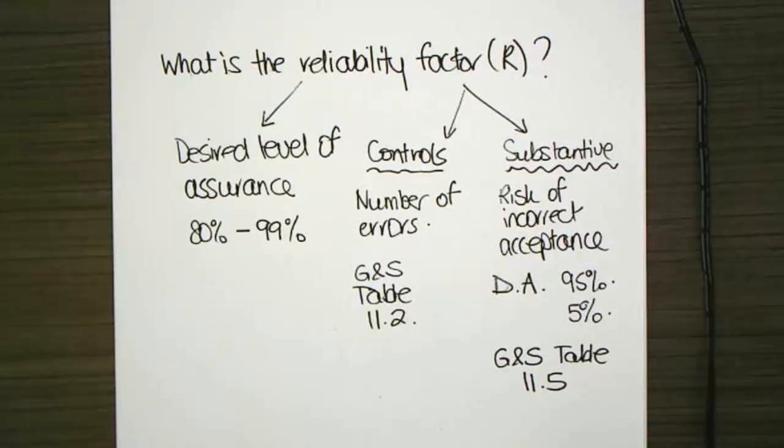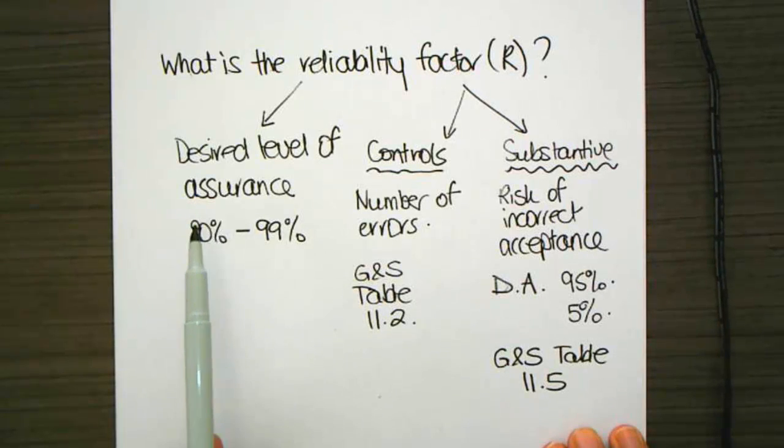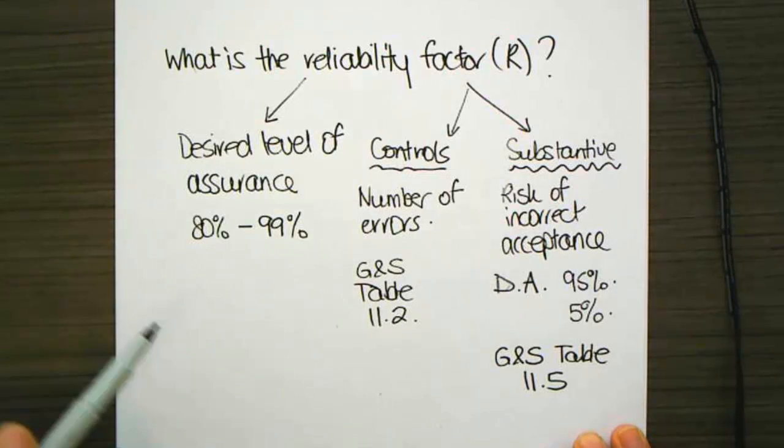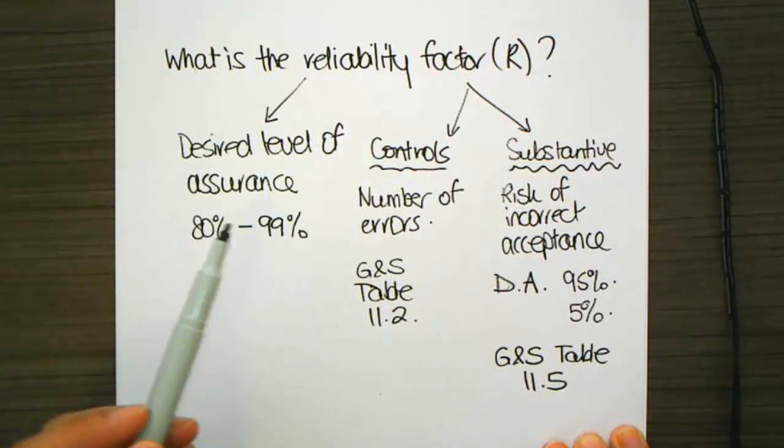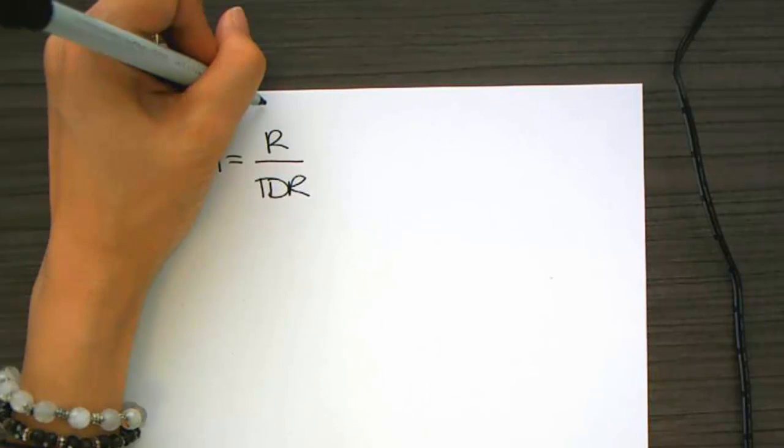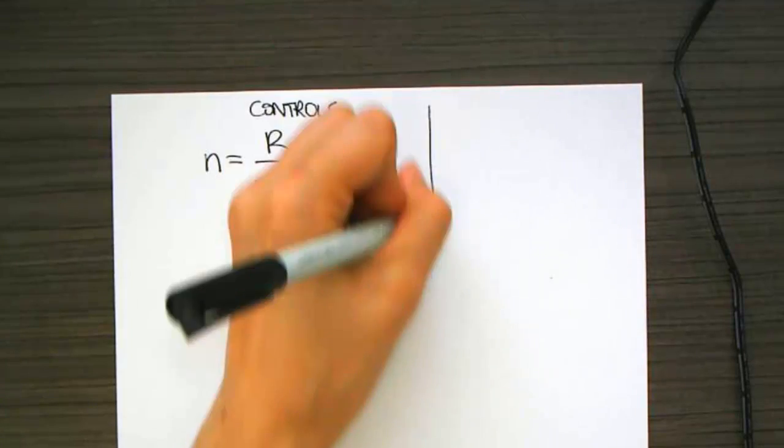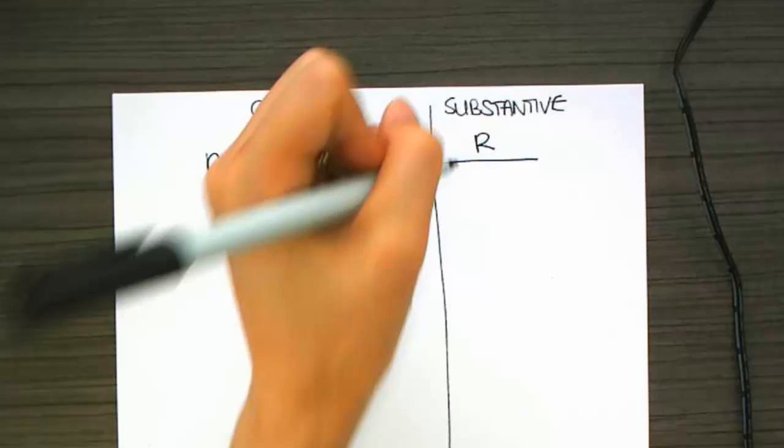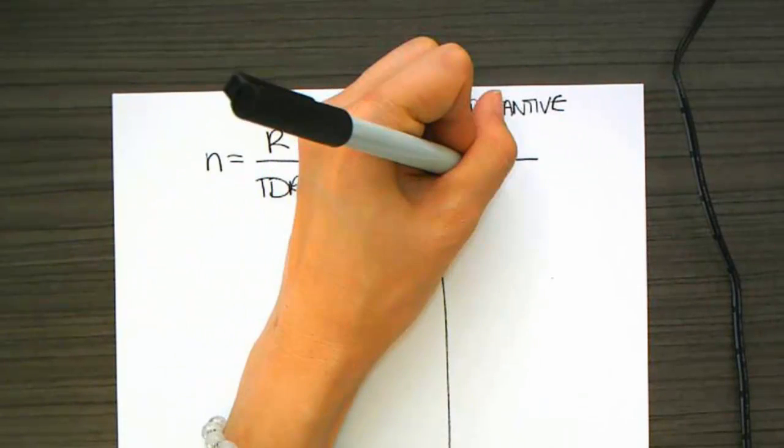So, let's move on to the next part, which is the calculation. Alright. So, I already know that my sample size is equal to R divided by TDR for controls. Now, that's a bit of a funny equation there. But if you rearrange that equation, what you actually get is that equals R times book value divided by the tolerable misstatement. So, all that's simply done is just rearrange the formula using algebra.